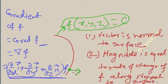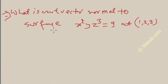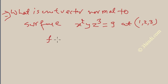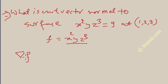Suppose there is a question: what is the unit vector normal to the surface x² y z³ = 9 at the point (1, 2, 3)? This is a surface and you require to find the normal vector at this point. Here f is defined as f = x² y z³.